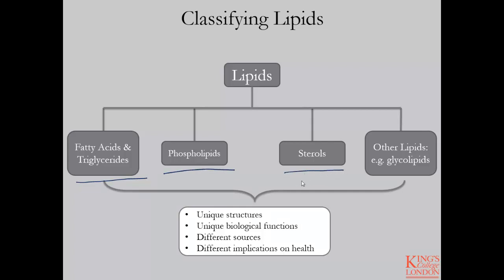There are other lipids and, depending on the perspective from which you are looking into lipid metabolism, other lipids such as glycolipids are relevant and important for various biological and cellular processes. However, we're not going to touch on any of these in the slides. What you do need to remember is that each of these classes of lipids has a unique structure and unique biological function. They come from different sources in the diet as well as different sources when they are produced endogenously, and they all have different implications on health and disease, both positive and negative.